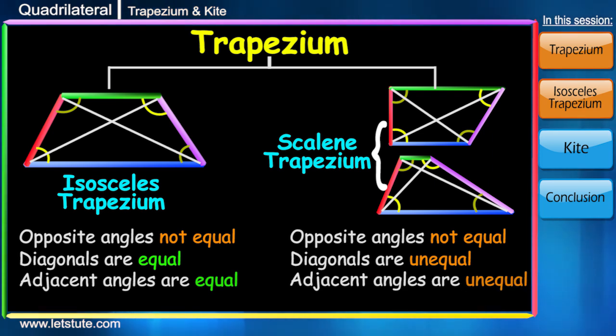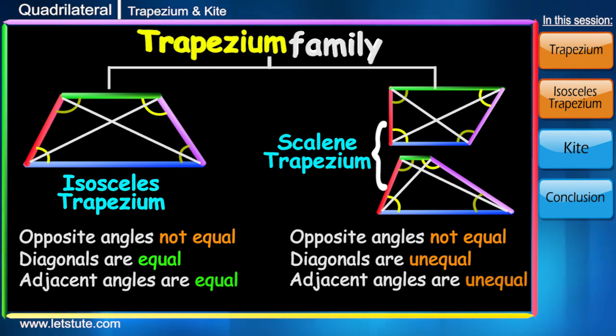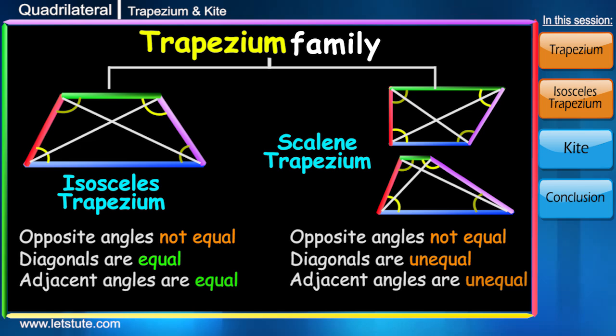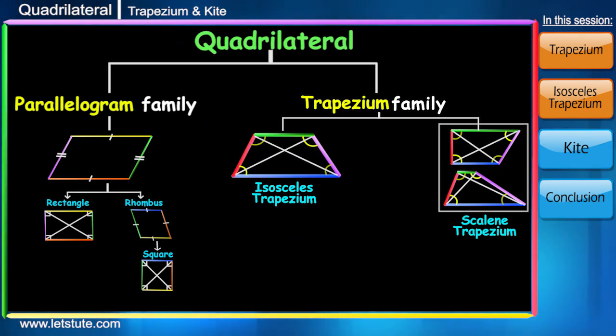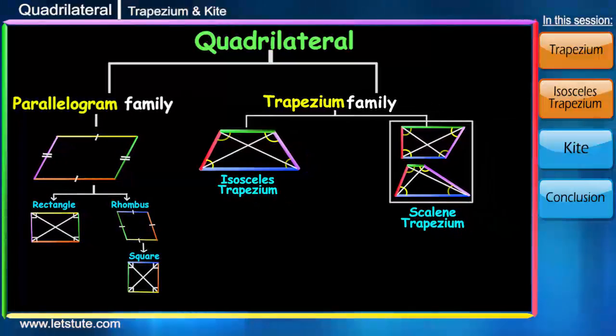So this was all about the trapezium family. Till now we have learnt about two families of quadrilaterals. If anyone asks you to recognize a shape belonging to these families, I hope you will be able to. Now there is only one family left: the kite family.